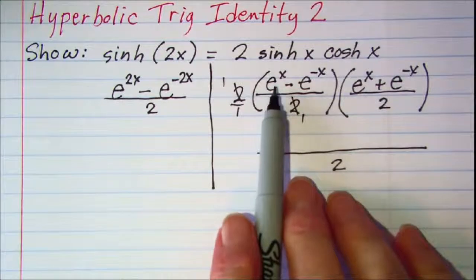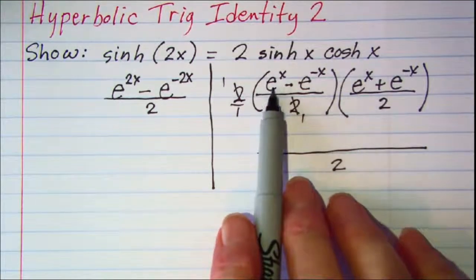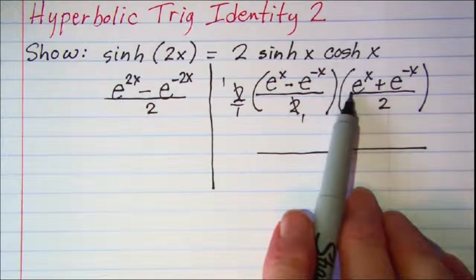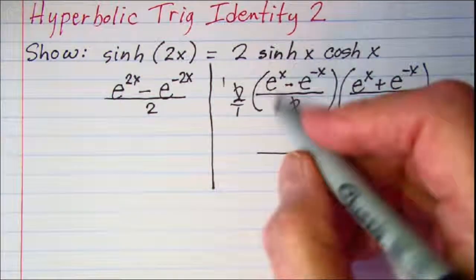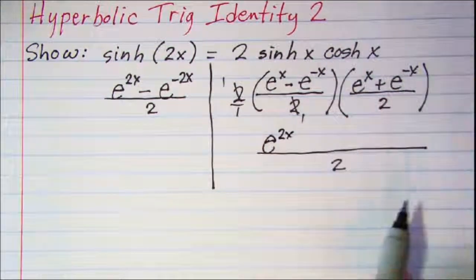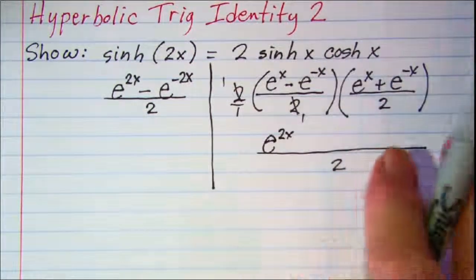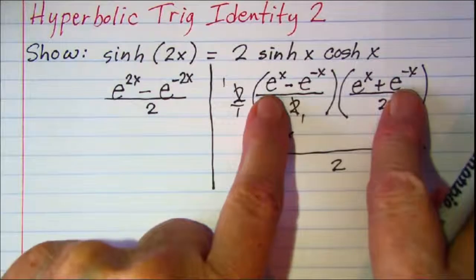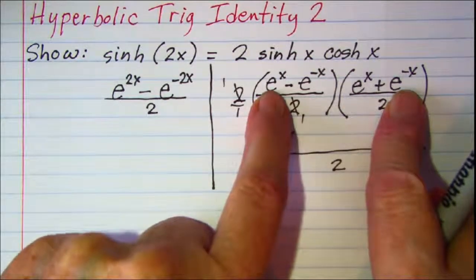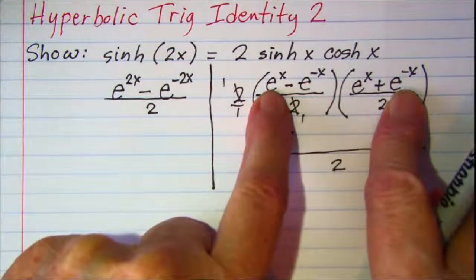Now I'm just going to use FOIL on this. E to the x times e to the x—remember we add our exponents—so that's the same as e to the 2x. And then my outer terms, e to the x times e to the negative x. Again, when we add those exponents we get e to the 0.